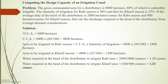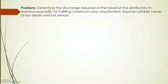From this example you should understand how to decide or design the capacity of an irrigation canal. There is another example using the same data: determine the discharge required at the head of the distributary for fulfilling maximum crop requirement, assuming suitable values of kor depth and kor period. You are encouraged to search and solve this problem yourself. The solution will be provided in the next video. Thank you and best of luck.